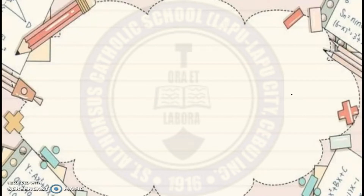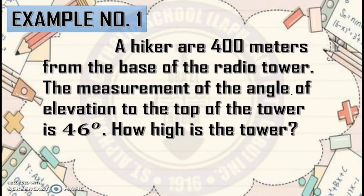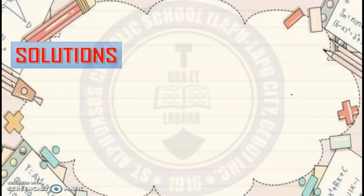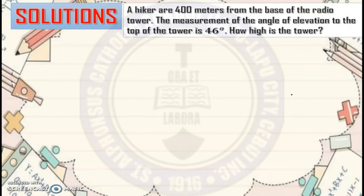Let's have different examples. Example number one: a hiker is 400 meters from the base of a radio tower. The measurement of the angle of elevation to the top of the tower is 46 degrees. How high is the tower? To understand the problem better, the first thing we're going to do is sketch the situation.